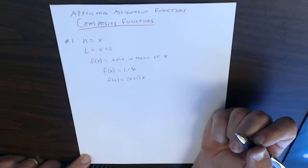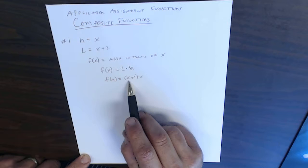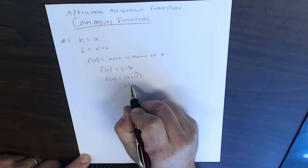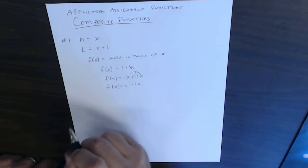Whenever you get something like this, you always want to simplify it, so we want to use order of operations. I can multiply through by the x, so we have x squared plus 2x, that is what my f of x equals. That's problem number 1.